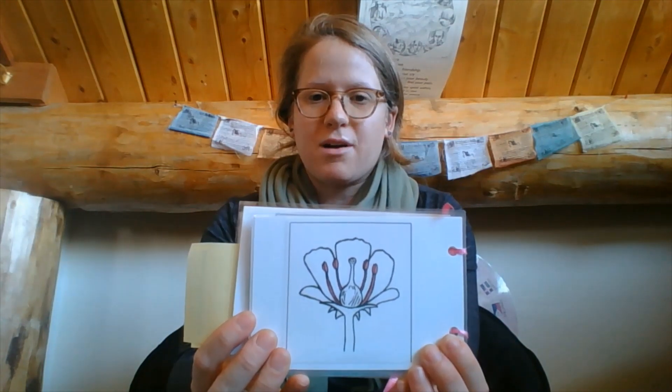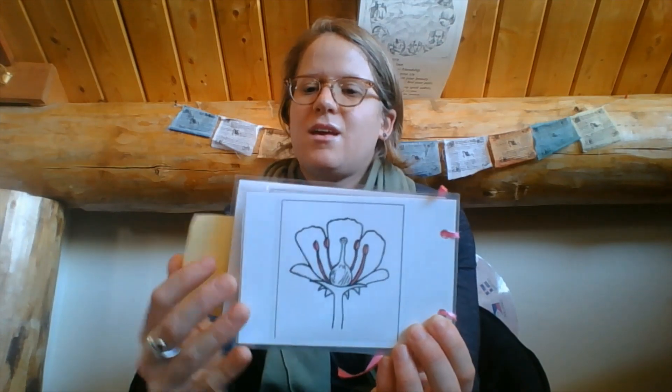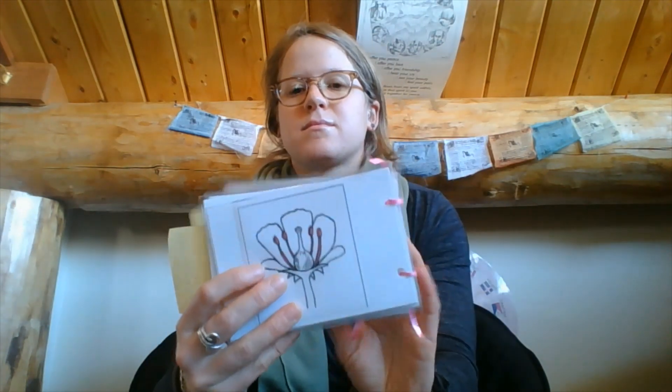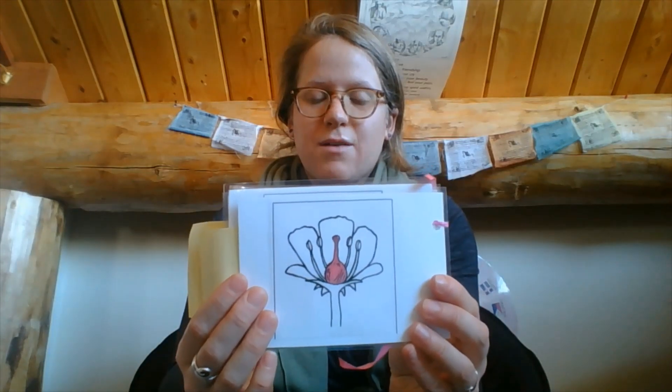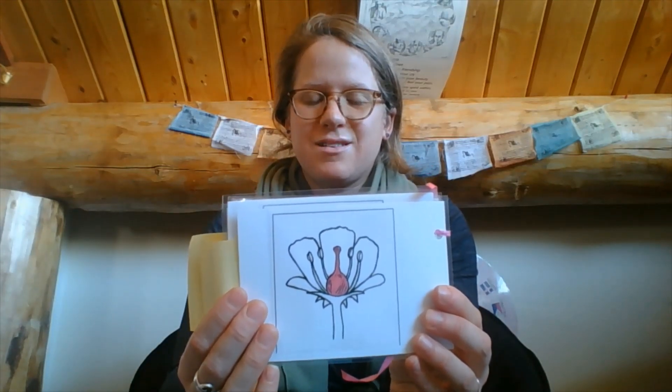Did you know that flowers have both male and female parts that help them reproduce? The male part of a flower is called the stamen. It consists of several parts that we'll talk about later. You can see that the stamens are in pink on this picture. The female part of the flower is called a pistil. It has several parts which we'll talk about later, and the pistil is colored in pink on this picture.